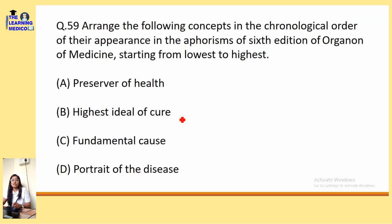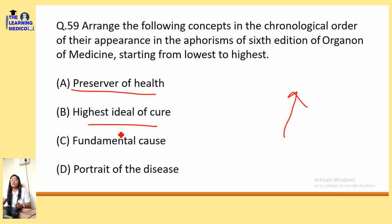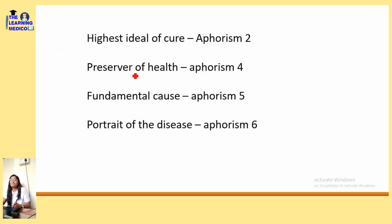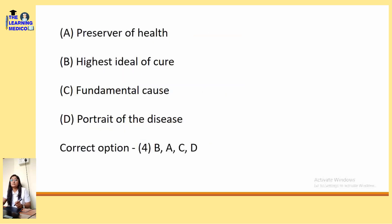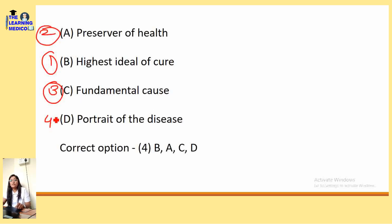Arrange the following concepts in chronological order of their appearance in the aphorisms of the sixth edition of the Organon of Medicine, from lowest to highest: highest title of cure (aphorism 2), preserver of health (aphorism 4), fundamental cause (aphorism 5), and portrait of disease (aphorism 6). The correct order is: highest title of cure → preserver of health → fundamental law → portrait of disease.